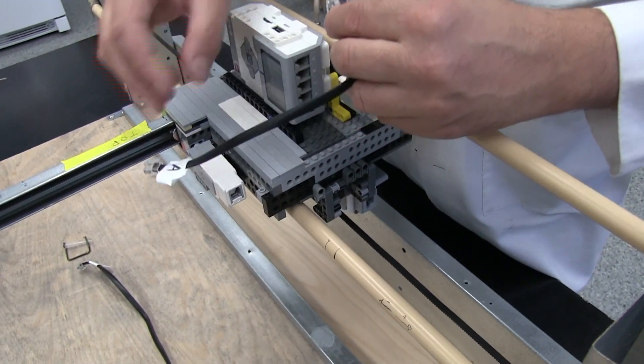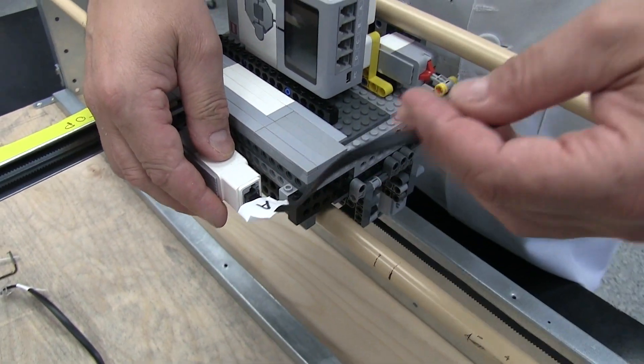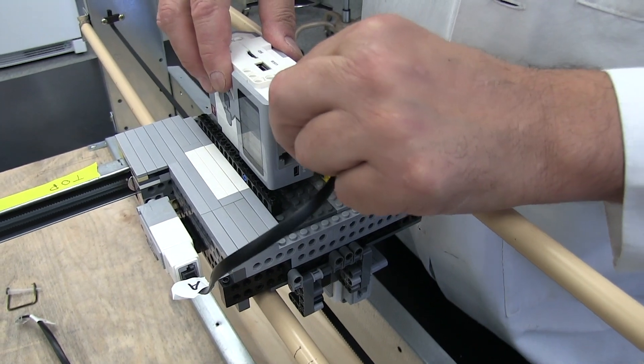Here, we will connect the motors to the EV3 unit using LEGO Mindstorm Kit cables. This will allow the EV3 unit to control the motor action of the platform.